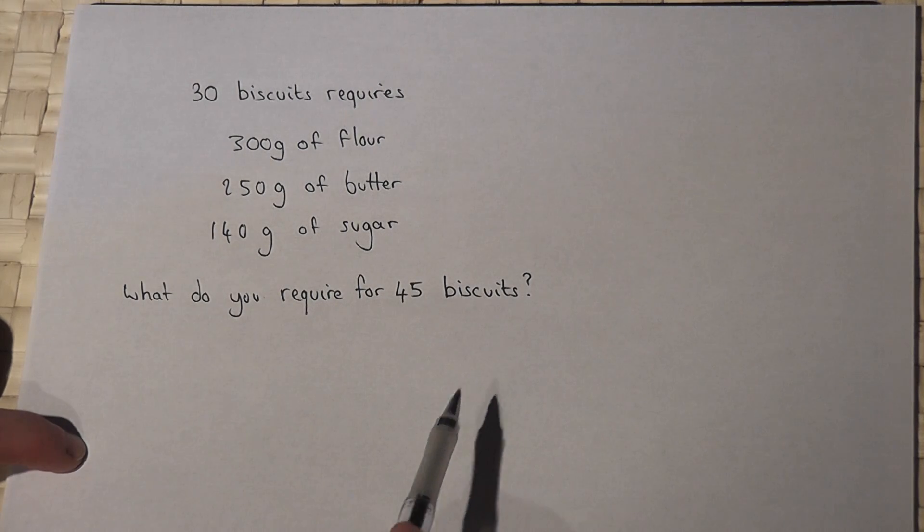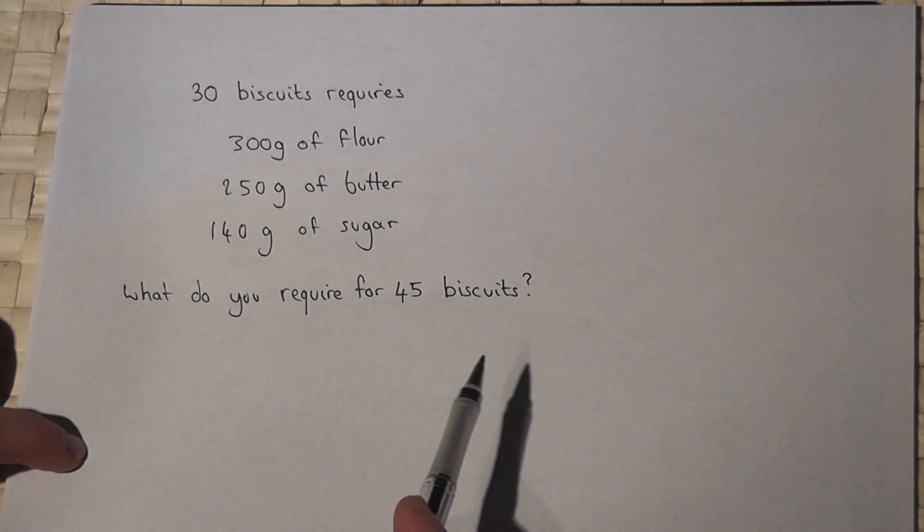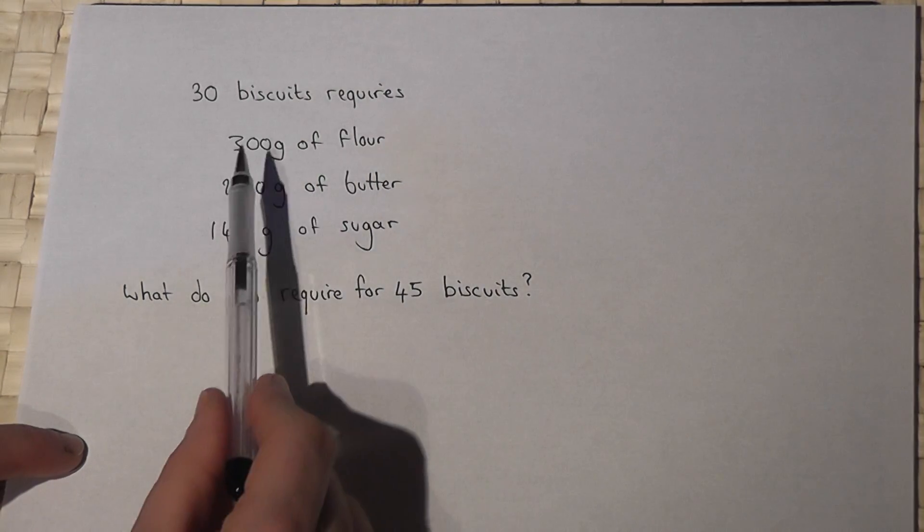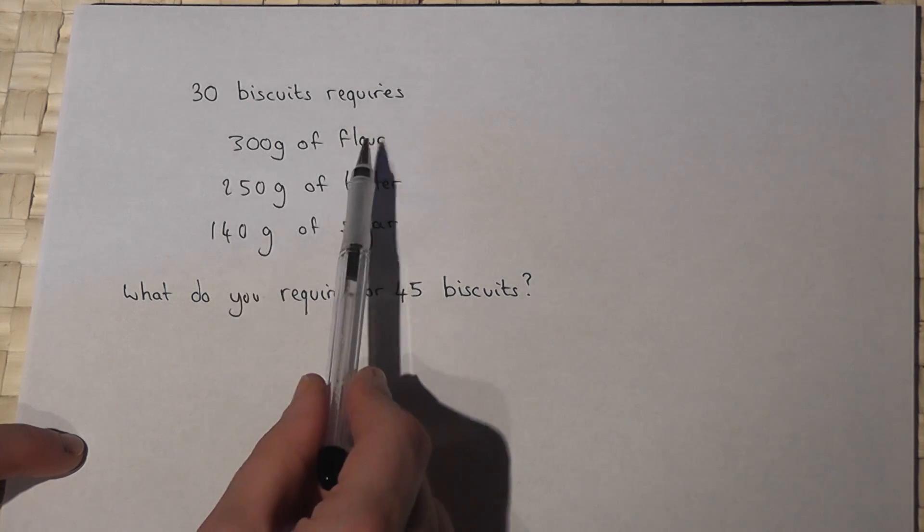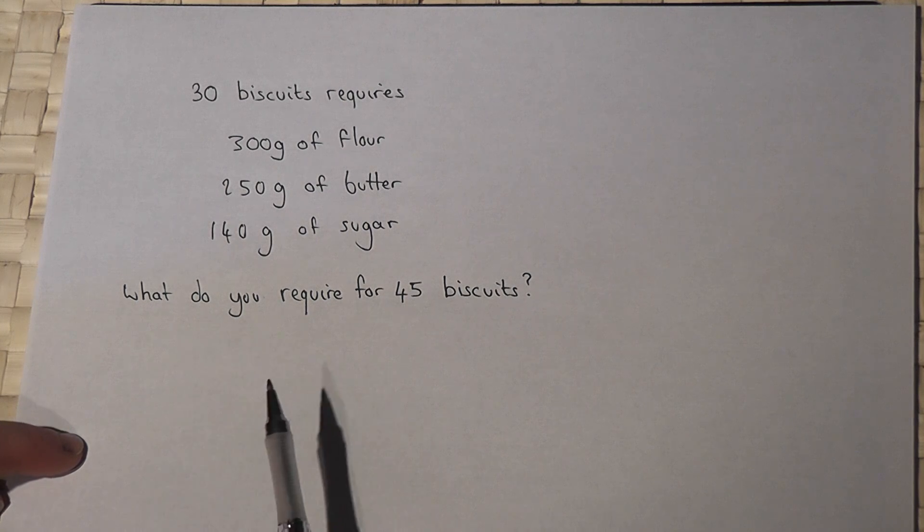This video reviews some important ideas which we associate with proportion and ratio. Now we're told that 30 biscuits require flour, butter, and sugar with these proportions, and the question says how much do you require for 45 biscuits?